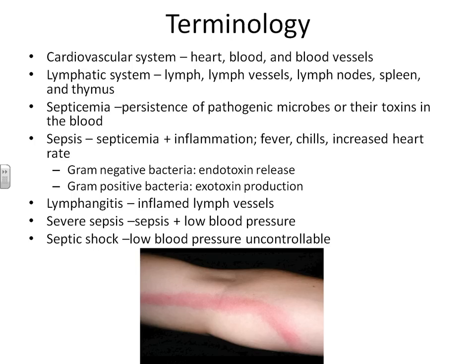Let's now recall a few terms that we learned in Chapter 14. Septicemia is the term we use for the presence of a pathogenic microbe or their toxins found in the blood. Any disease of the cardiovascular or lymphatic system is going to include septicemia, because anything found in the lymph is eventually going to be dumped into your blood.